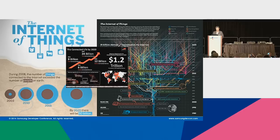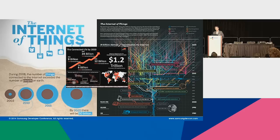So, the Internet of Things — it's big. All the analysts say it, all the companies say it. Cisco projects 50 billion connected devices by 2020, a $1.2 trillion dollar market. We all know there's a lot of hype around this. But I think from a design perspective, from a user experience perspective, as well as from a technology perspective, we have a ways to go.